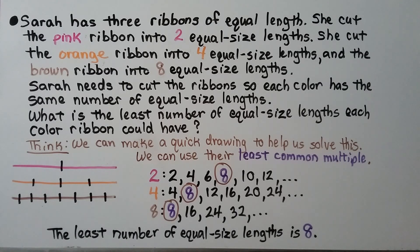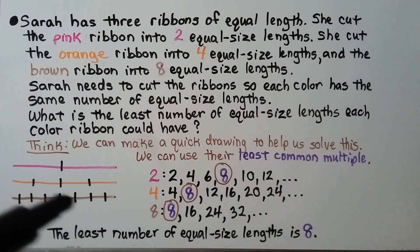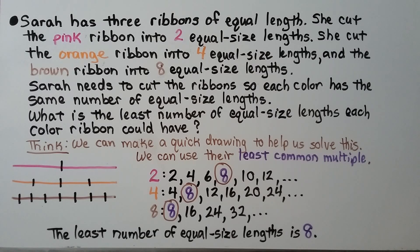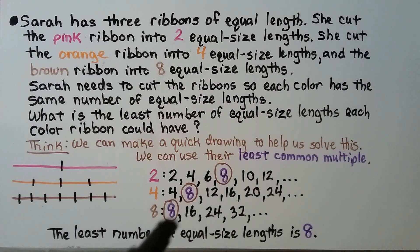Sarah has 3 ribbons of equal length. She cut the pink ribbon into 2 equal size lengths, the orange ribbon into 4 equal size lengths, and the brown ribbon into 8 equal size lengths. Sarah needs to cut the ribbon so each color has the same number of equal size lengths. What is the least number of equal size lengths each color ribbon could have? We can make a quick drawing and list the multiples of 2, 4, and 8. We find that 8 is the least common multiple, so the answer is 8.